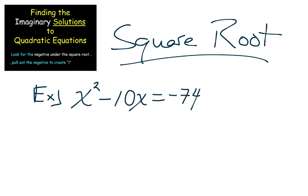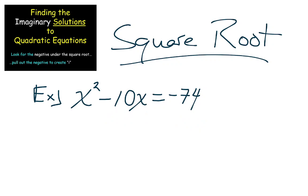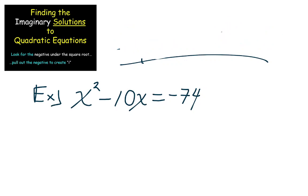Are you going to just take the square root of both sides on this next problem? No, because this 10x needs to be dealt with. The reason is I have more than just x squared — when you have more than just x squared, you need a different quadratic method.